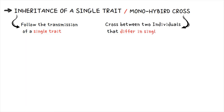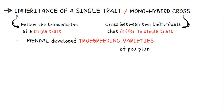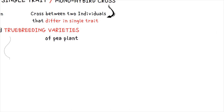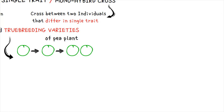A monohybrid cross is a cross between two individual plants that differ in a single trait. To perform these experiments, Mendel developed true breeding varieties of pea plants. He selected a plant that produced green seeds and self-pollinated it, giving rise to another plant that also produced green seeds. He again self-pollinated those plants, repeating this over many generations.